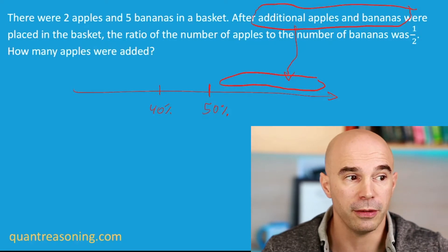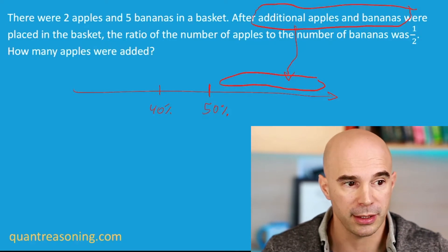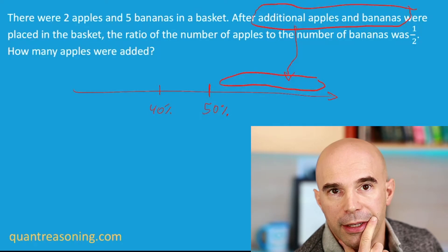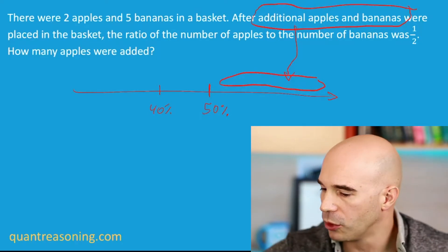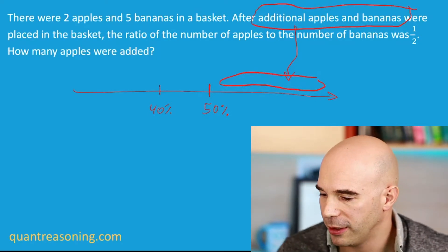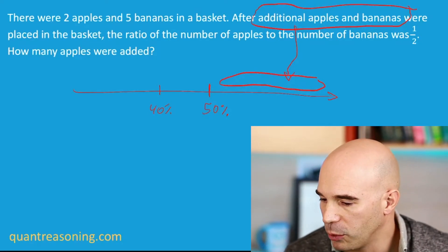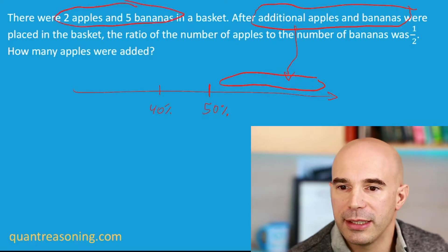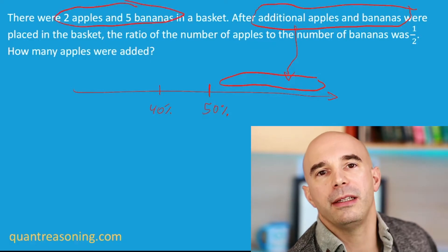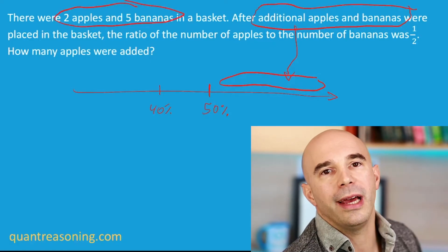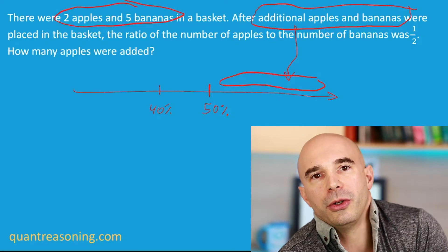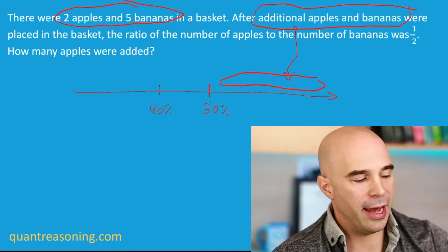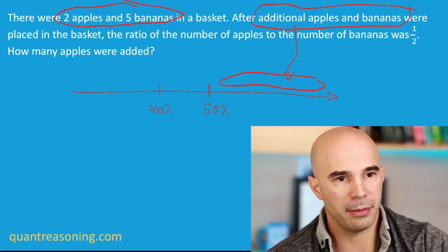In every weighted average, that third percentage has to be greater than what's in between. So I drew a cloud here on the other side of the result — on the other side of half. The ratio of new apples to new bananas, the ones that were added, has to be somewhere within that cloud to the right of 50, because otherwise the end result wouldn't be at 50. The 50 is a mixture of two ratios, one below 50 and one above 50. The starting one was below 50 at 40%; the new one has to be on the other side.